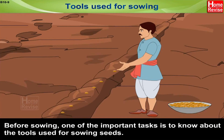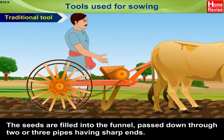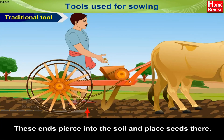Tools used for sowing. The tool used traditionally for sowing seeds is shaped like a funnel. The seeds are filled into the funnel and passed down through two or three pipes having sharp ends. These ends pierce into the soil and place the seeds there.